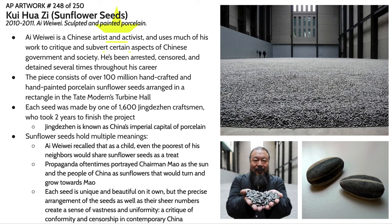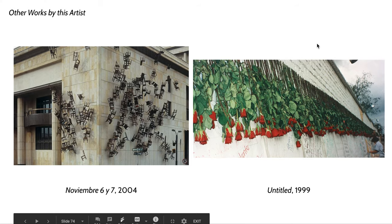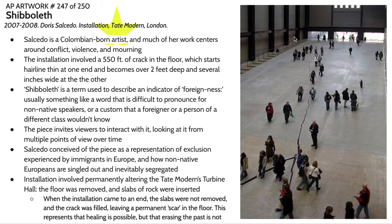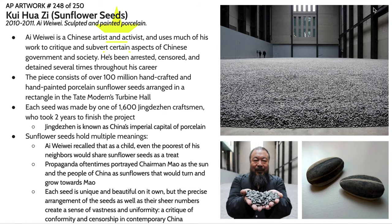Because of that, he has moved to a more international audience for a lot of his pieces, including this piece, Sunflower Seeds, which is in the Tate Turbine Hall. You might recognize this location from Shibboleth, which is a piece we covered last class. This piece consists of over 100 million handcrafted, hand-painted porcelain sunflower seeds.